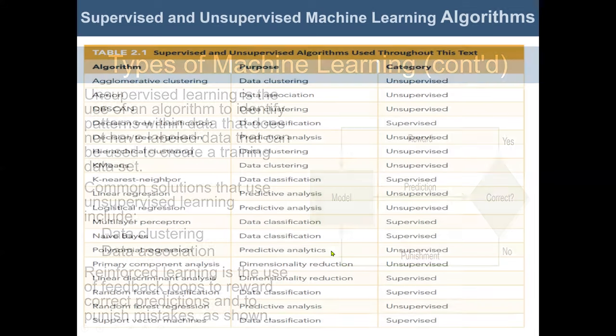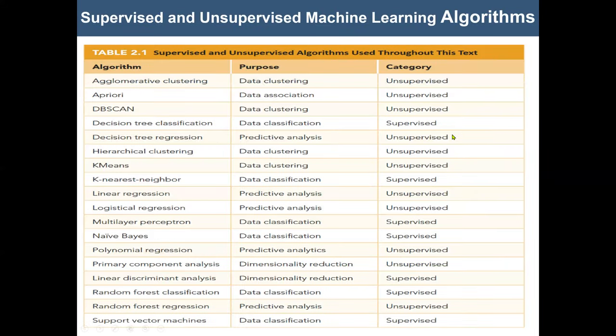Those are the three major machine learning types, but within each there are many algorithms — for example, classification alone may have over 10 algorithms. Deep learning can fall between classification and clustering because it is based on the concept of neural networking. These are some of the algorithms we will go through.